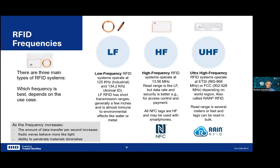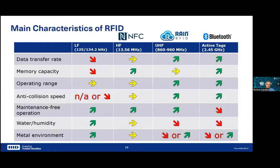You can also combine technologies — for example, a single card with LF, HF, and UHF — using LF for access control at a door, HF for payment in the cafeteria, and UHF for accessing a parking lot. In summary: LF is slow but very immune to the environment; UHF is fast but struggles with water. For metal, the tag must be specifically designed for it. UHF does not read through metal, whereas LF can, though not very far.